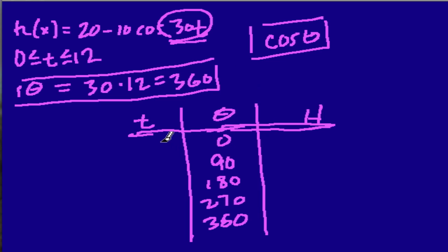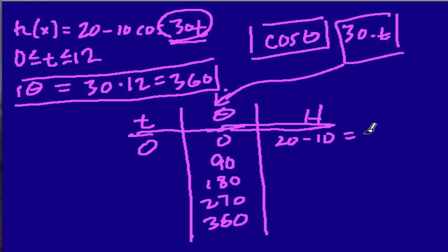Well, to get 0, I'm going to plug in 0 for the time because 30t is the equation I'm using here because that's what theta is. So to get theta, I plug in t, 0 times 30 is 0. I can figure out the height. Well, my function is 20 minus 10 times the cosine of theta and theta is 0. So what's the cosine of 0? Well, that's just equal to 1. So the height is 20 minus 10 times 1 or 20 minus 10 and the height here is 10.